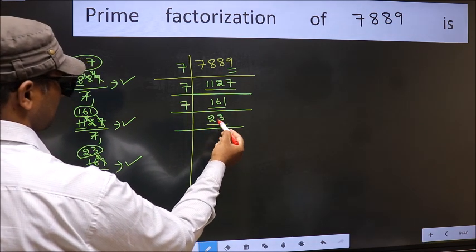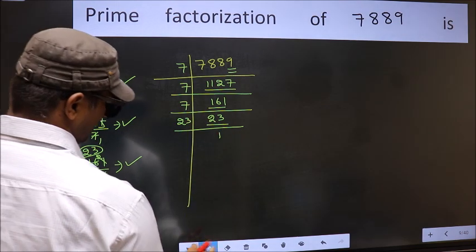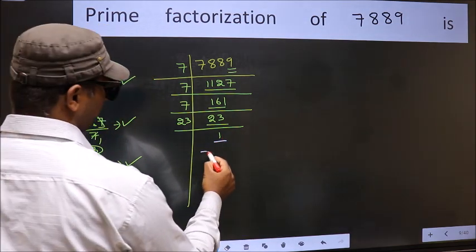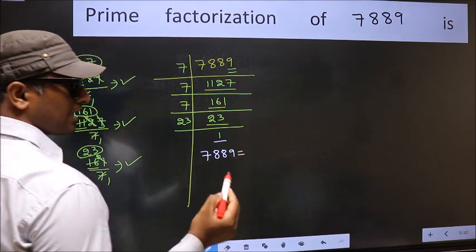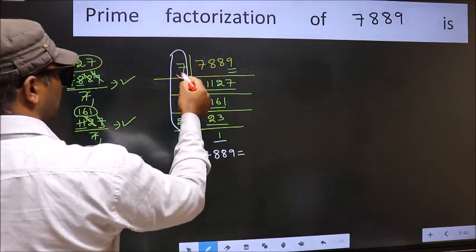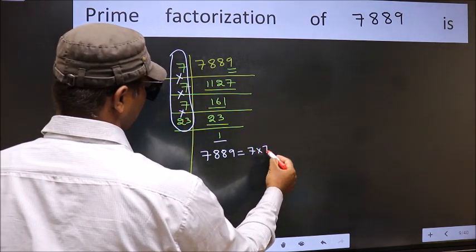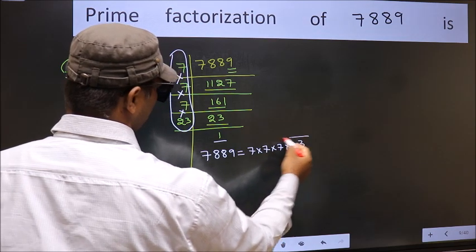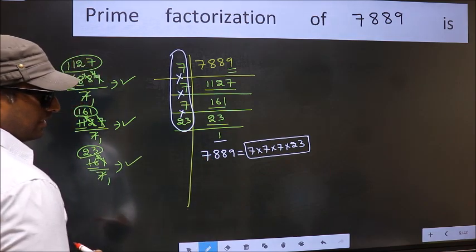Now we have 23. 23 is a prime number, so 23 times 1 = 23, giving us 1 here. So the prime factorization of 7889 is the product of these numbers — that is 7 times 7 times 7 times 7 times 23. This is the prime factorization of 7889.